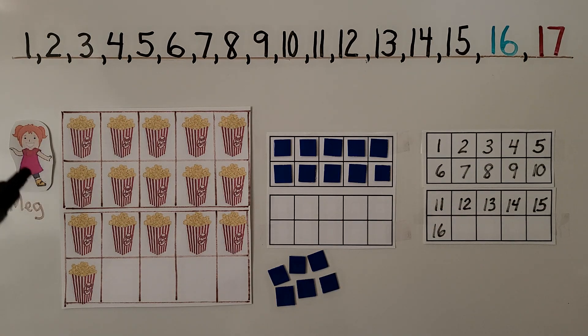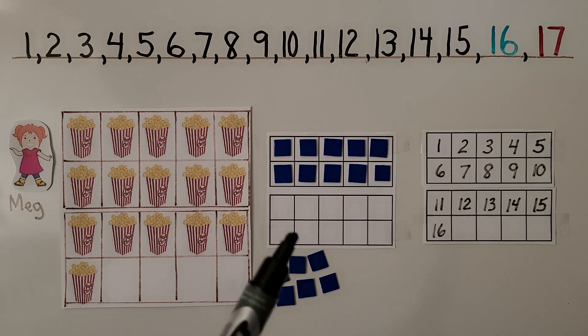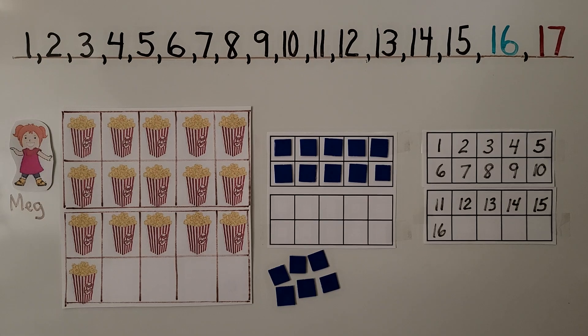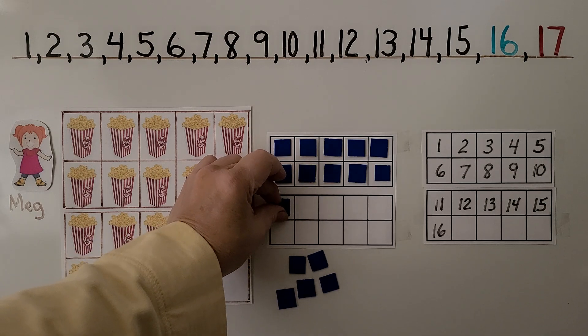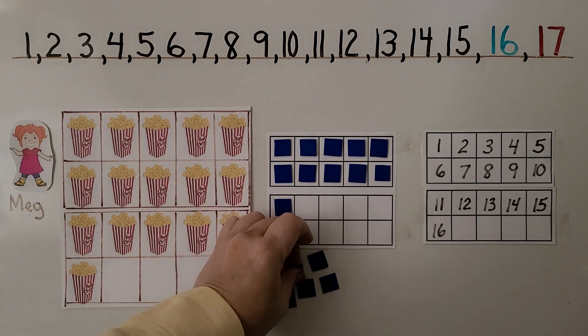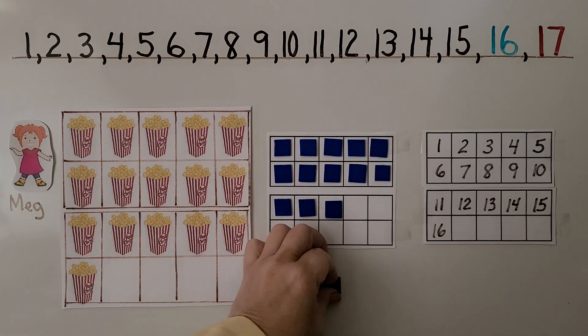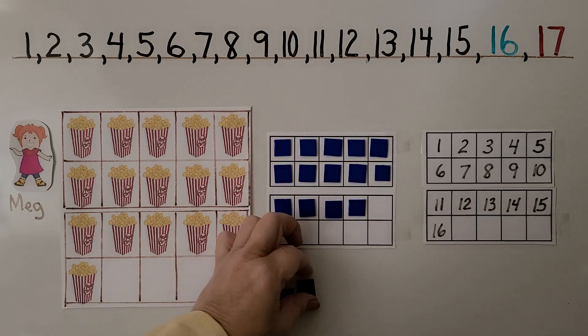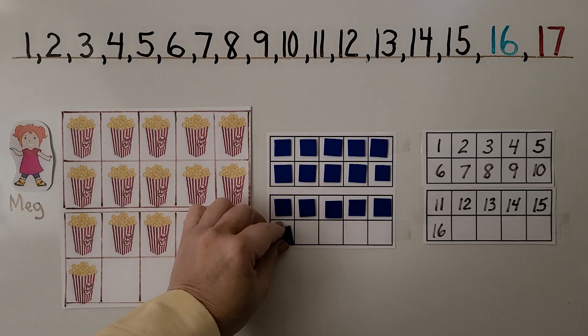Here's Meg. Meg made 16 boxes of popcorn. We can model how many she made by filling in a 10 frame to make 10. Then we put 6 in the bottom 10 frame. We have 10 and then in the bottom 10 frame we put 1, 2, 3, 4. We know that 5 makes a full row, doesn't it? And then 1 more here would make the 6.